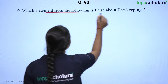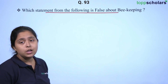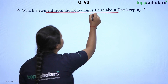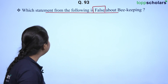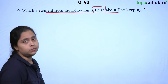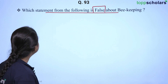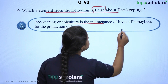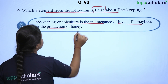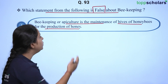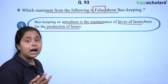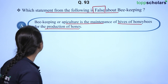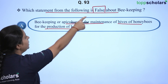Which statement from the following is false about beekeeping? Beekeeping is also known as apiculture, and we need to find out the false statement. Option A: beekeeping or apiculture is the maintenance of hives of honeybees for the production of honey. This statement is true — we do beekeeping because honey is of commercial importance and has many medicinal purposes.